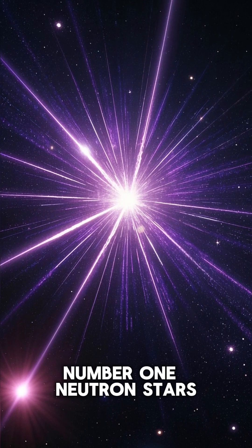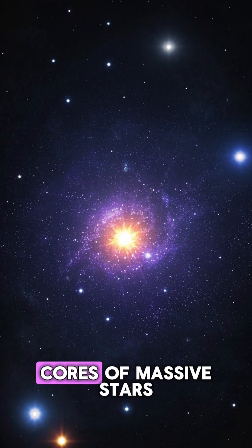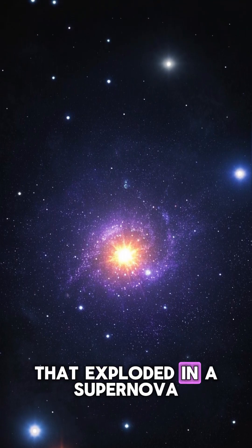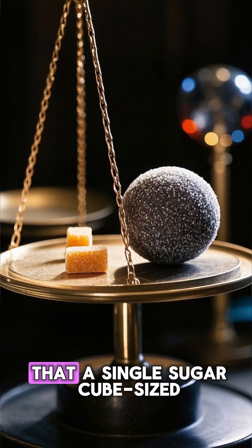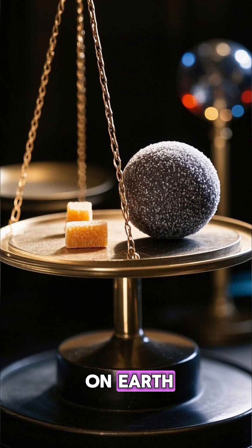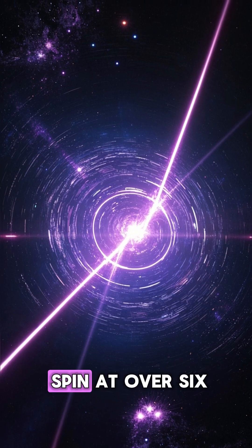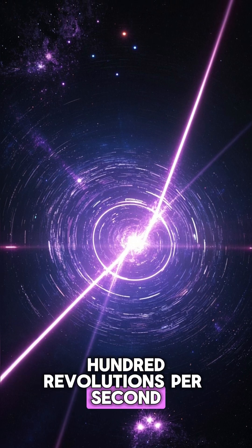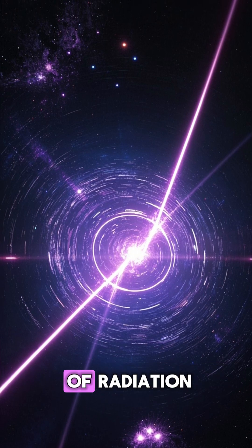Number 1: Neutron stars. These are the collapsed cores of massive stars that exploded in a supernova. They are so dense that a single sugar cube-sized piece would weigh around 100 million tons on Earth. Some neutron stars even spin at over 600 revolutions per second, blasting out intense beams of radiation.